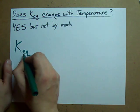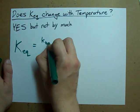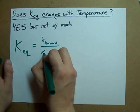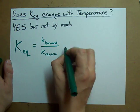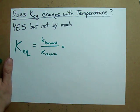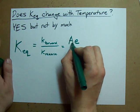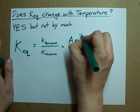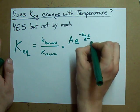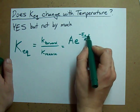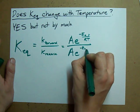Keq, or the equilibrium constant for a reaction, is the ratio of the forward and reverse reaction rate constants, or little k. If you remember kinetics, the rate constant, according to the Arrhenius equation, is an Arrhenius factor times e to the negative activation energy over RT. I'm going to denote the activation energy of the forward reaction with a little F, and the activation energy of the reverse reaction with a little R.